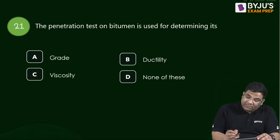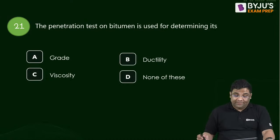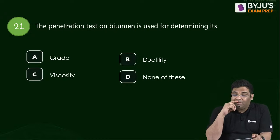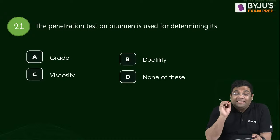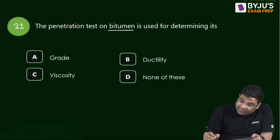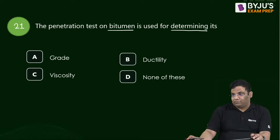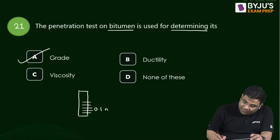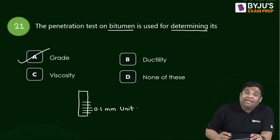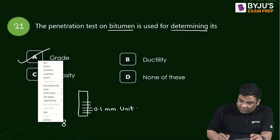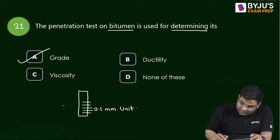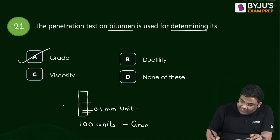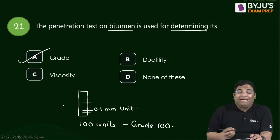Question 21: The penetration test on bitumen is used to determine its grade. Penetration is measured in units of 0.1 mm. If penetration is 100 units, the grade is Grade 100 (e.g., 80/100 grade bitumen).